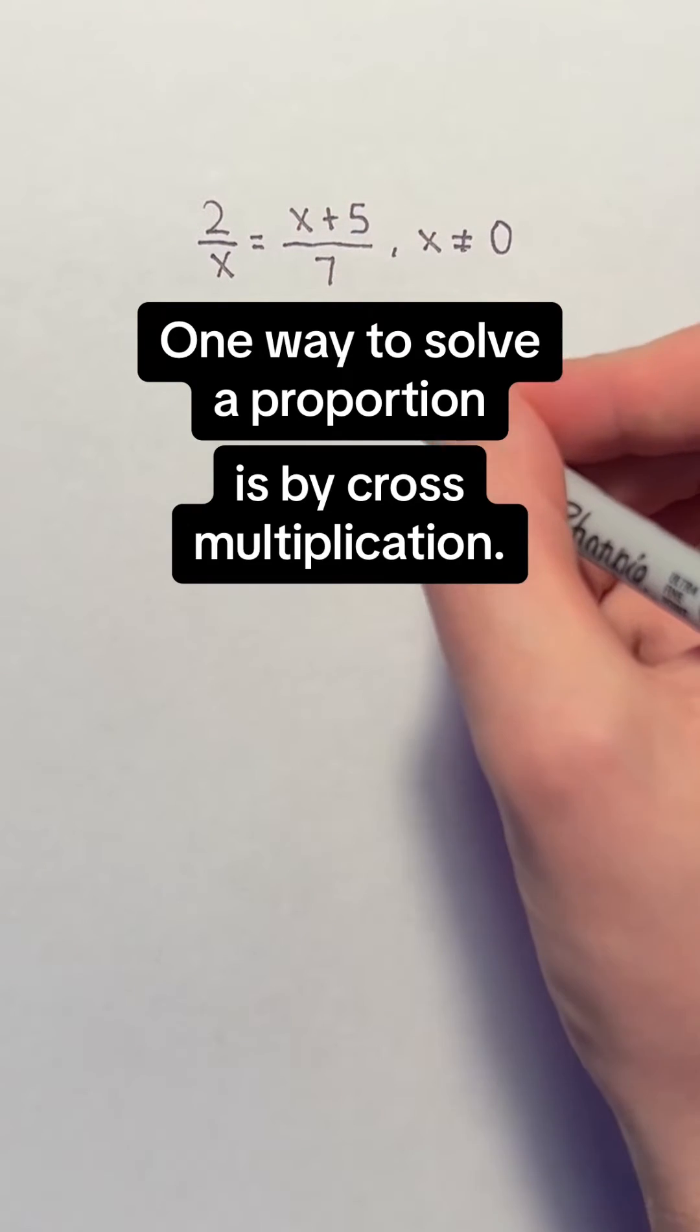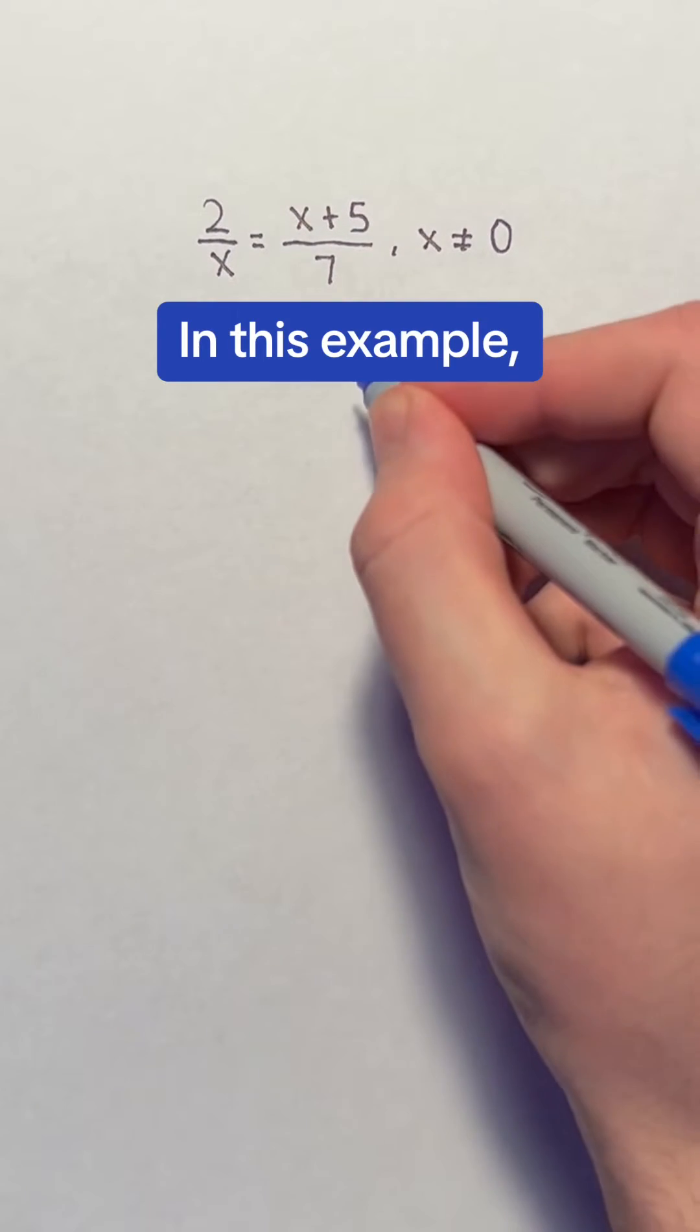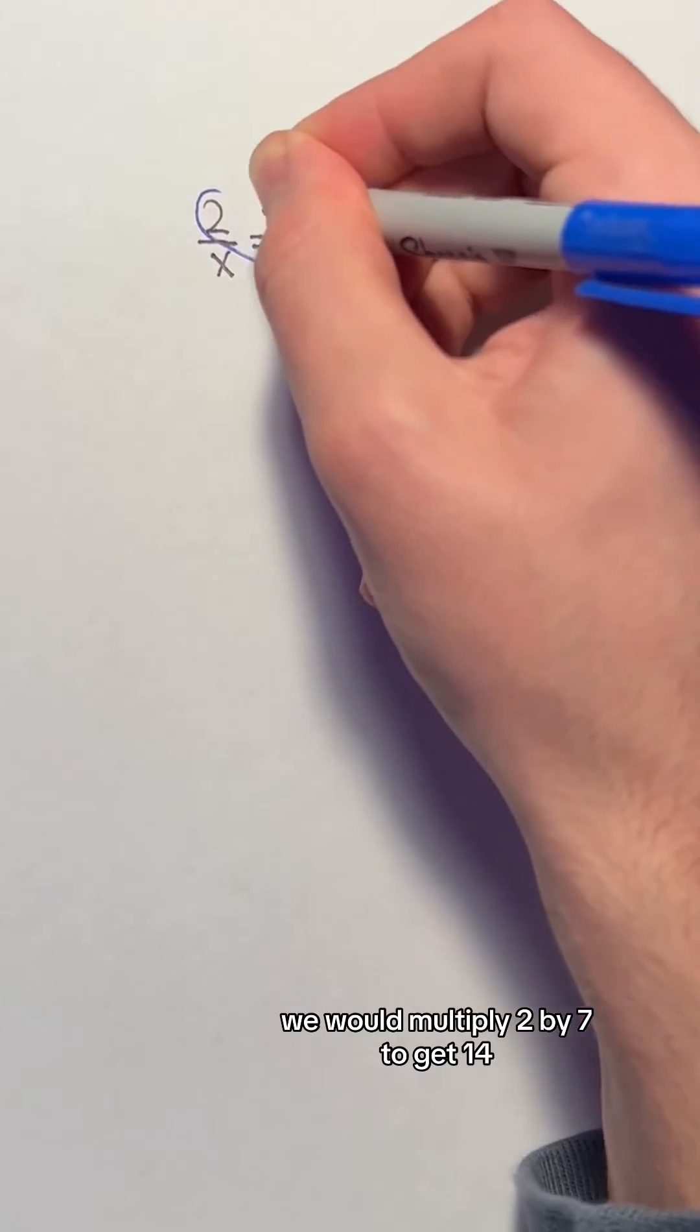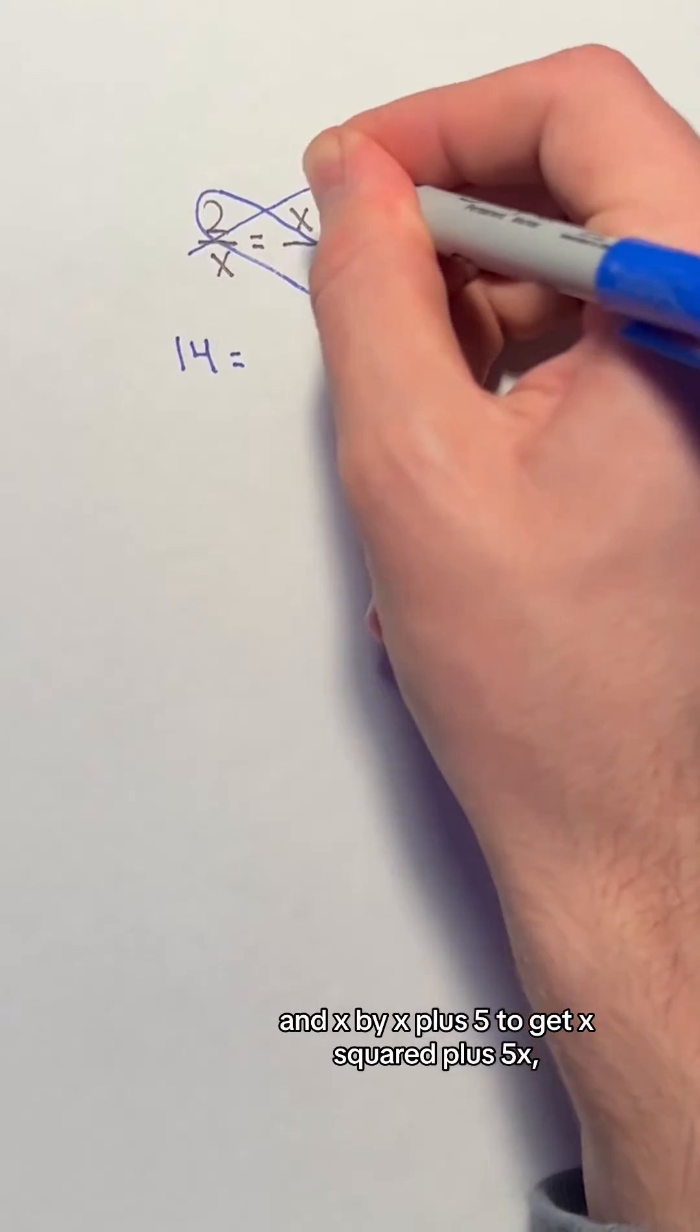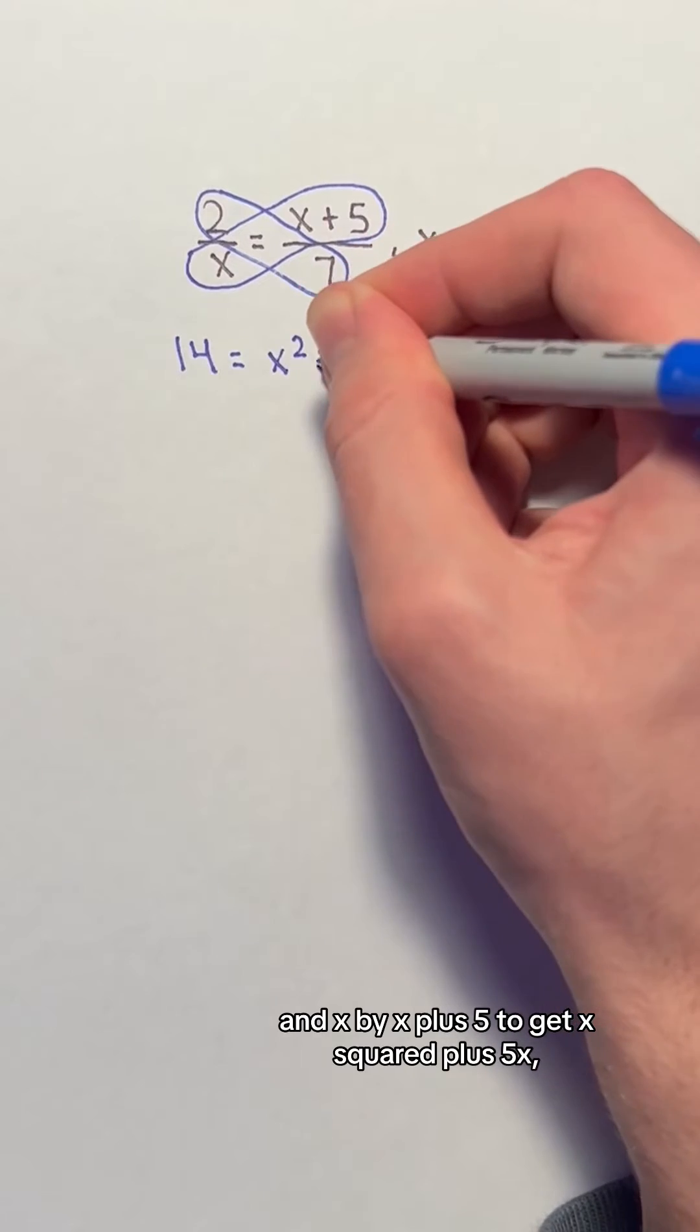One way to solve a proportion is by cross multiplication. In this example, if we were to cross multiply, we would multiply 2 by 7 to get 14, and x by x plus 5 to get x squared plus 5x.